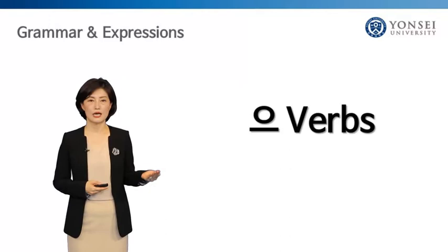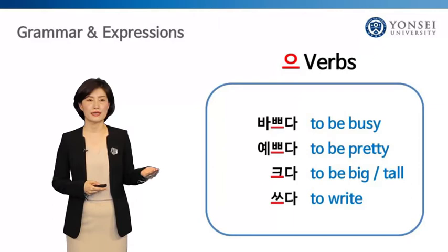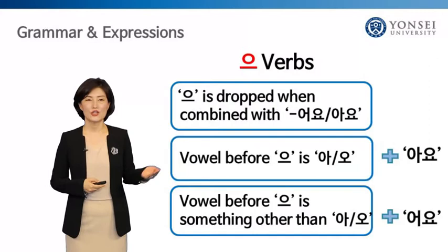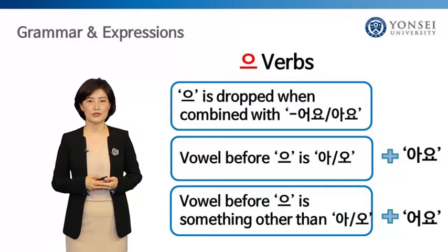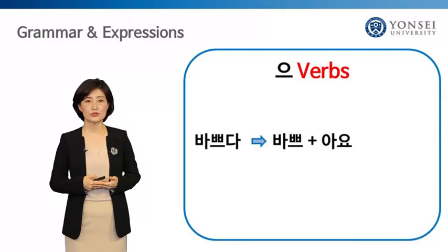Now let's study today's grammar. In this unit, you will learn how 으 verbs in Korean conjugate when they meet 어요 or 아요. 으 verbs are action verbs and descriptive verbs that have a verb stem ending in the vowel 으, like 바쁘다, 예쁘다, and 크다. The verb stem's final 으 is dropped when combined with 어요 or 아요. If the vowel before 으 is 아 or 오, use 아요. If the vowel is something other than 아 or 오, use 어요.